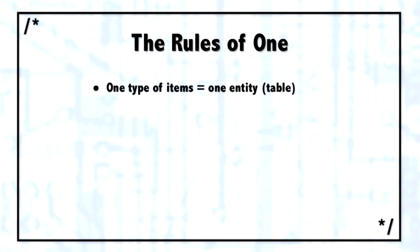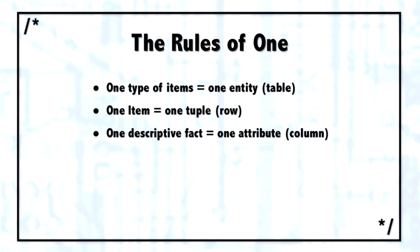To look at normalization from a positive standpoint rather than a negative way, it's best summarized as the rules of one. If you take one type of items or one group of things, they should all be together inside of one table. Each one item should be represented in a table by one row or one tuple. Each one descriptive fact or one attribute about those items should be represented in one attribute or one column in the database. And then every one of those columns should actually describe that specific entity, not some other entity.